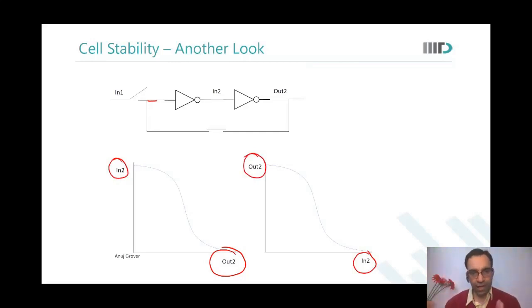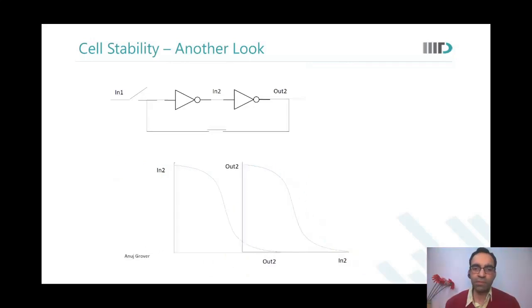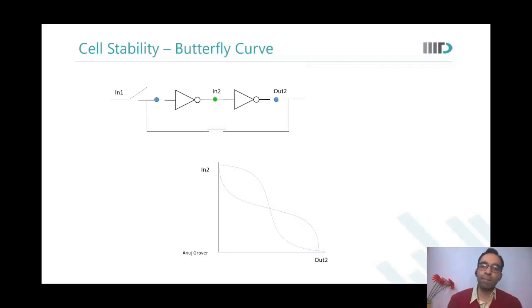Both the curves are between in2 and out2. I can actually overlap them, but when I want to overlap them I will have to flip one of the curves. As I flip one of the curves, what happens? I come up with what is called as a butterfly curve.